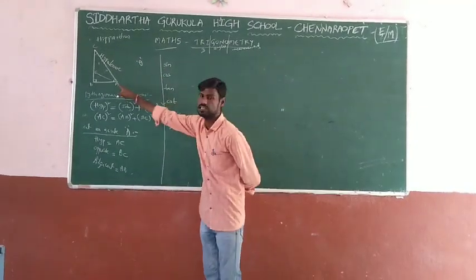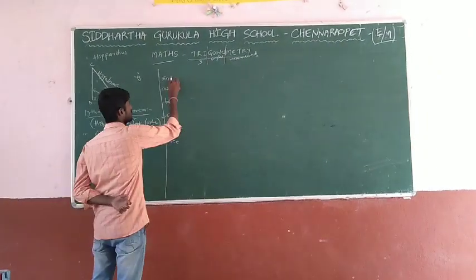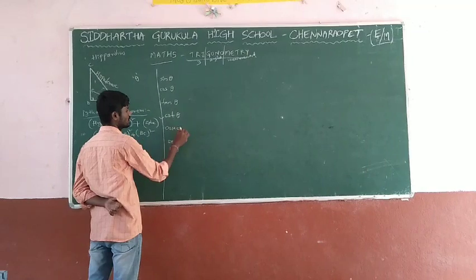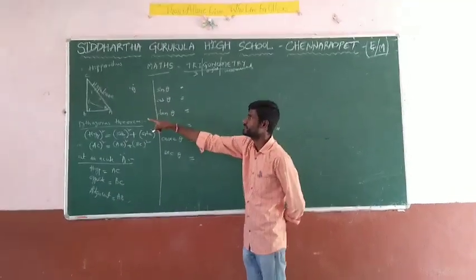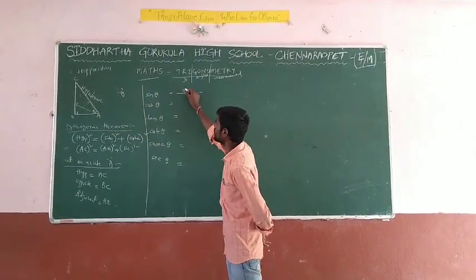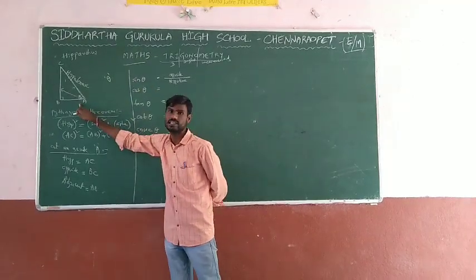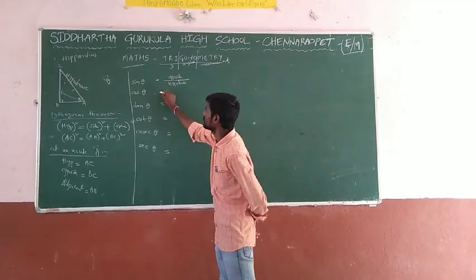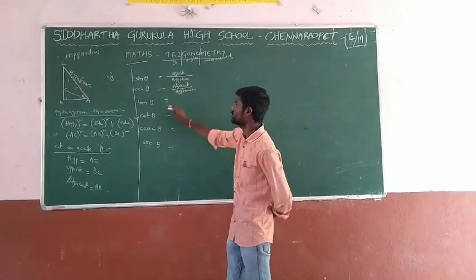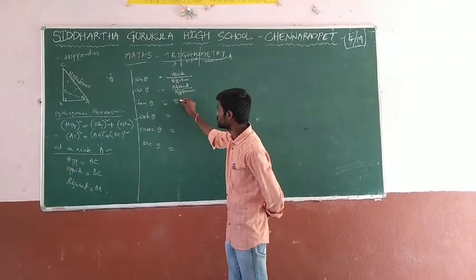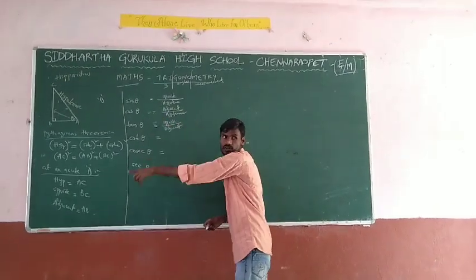For the acute angle theta, the functions are: sin theta, cos theta, tan theta, cot theta, cosec theta, and sec theta — those are the major. Taking triangle ABC, sin function is the ratio of opposite side to hypotenuse. Cos function is adjacent by hypotenuse. Tan function is opposite by adjacent. These divisions are called ratios, which is why they are named trigonometric ratios.